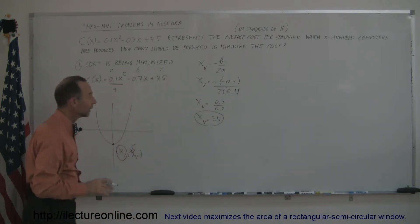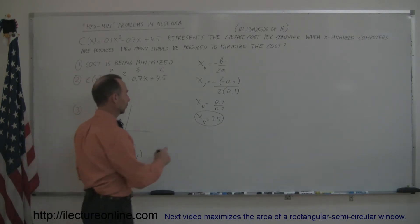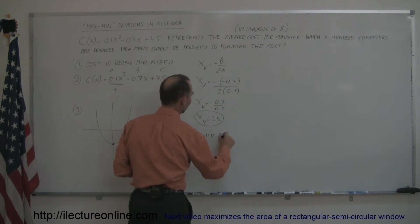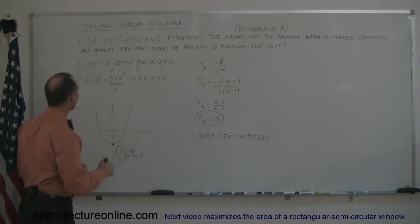So what that means is when x is 3.5, and of course x is hundreds of computers, we should have minimum cost. So therefore, we can say that we need to build 350 computers. And what will then be the minimum cost?